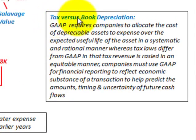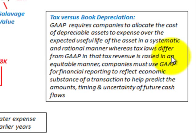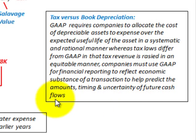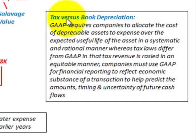One final point on tax versus book depreciation: GAAP requires companies to allocate the cost of depreciable assets over the expected useful life in a systematic and rational manner, whereas tax laws differ from GAAP in that tax revenue is raised in an equitable manner. Companies must use GAAP for financial reporting to reflect economic substance of transactions. For book purposes, use GAAP depreciation methods; for tax purposes, use the MACRS system.